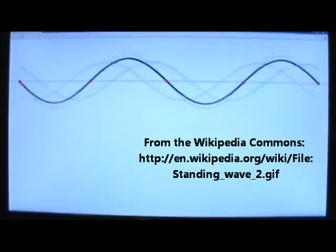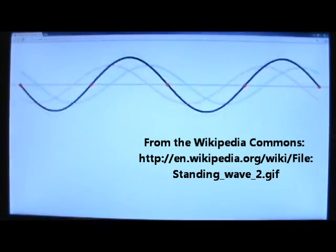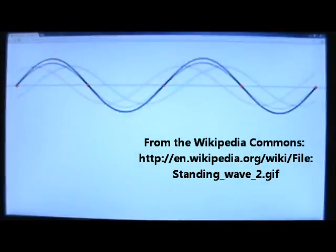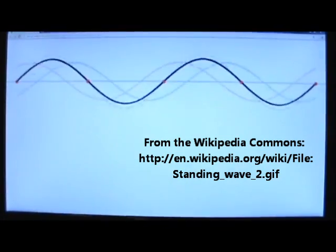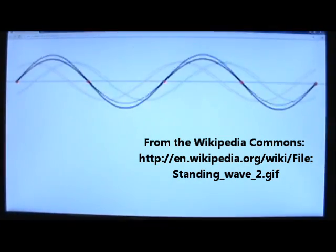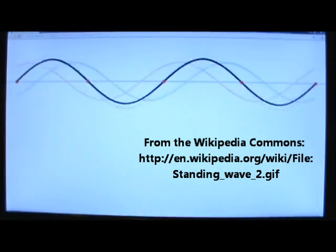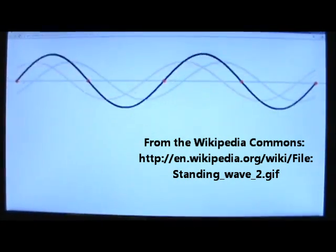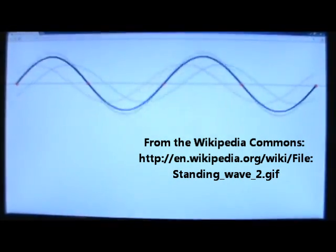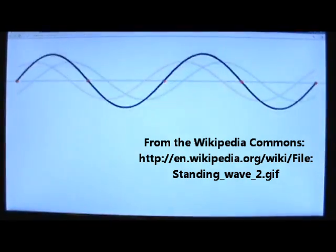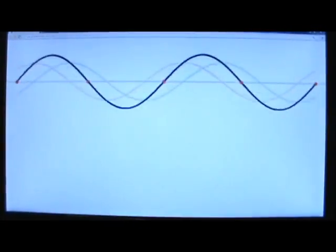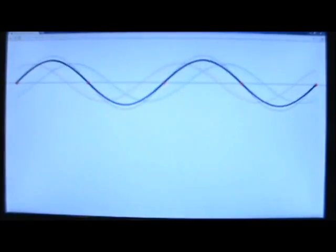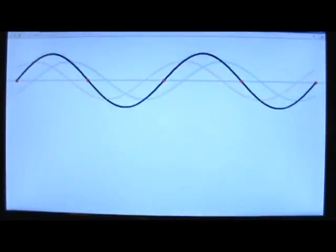Standing waves are results of interference — the interference of two identical periodic waves. Here we have the light blue wave traveling to the right and the red wave traveling to the left. If we use the superposition principle to add the two waves together at any moment, we will get the dark blue interference result, which is the dark blue standing wave. Notice that there are five red dots that stay still at all times. Those dots are called nodes.